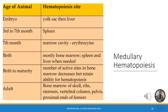Looking at this picture, we have the age of the person on one axis and the site of hematopoiesis on the other. We have the embryo, gestational period from third to seventh month, after seven months, birth, birth to maturity, and adult life. Hematopoiesis within the bone marrow is termed intramedullary hematopoiesis.